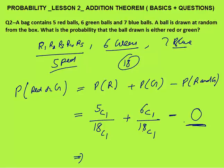So the answer is 5/18 + 6/18 − 0 = 11/18. 5C1 = 5, 6C1 = 6, 18C1 = 18. So 11/18 is your final answer.